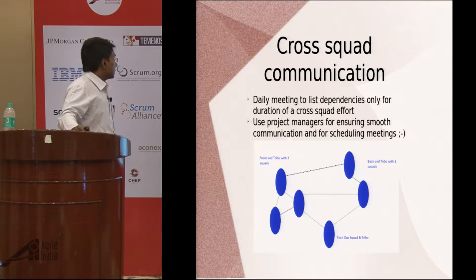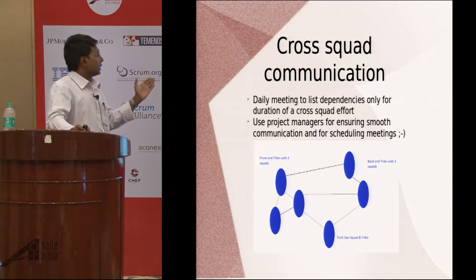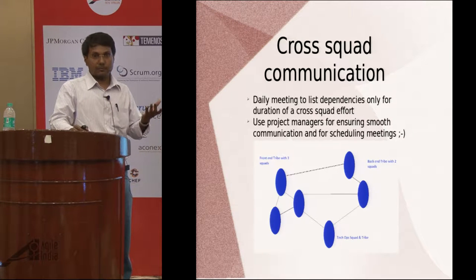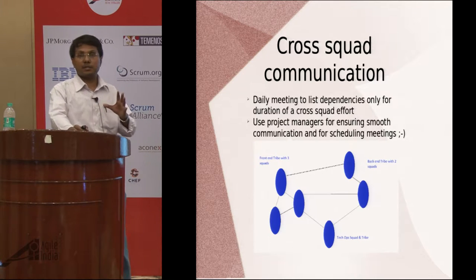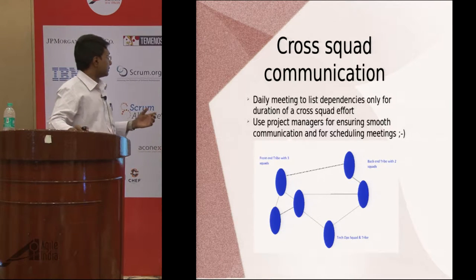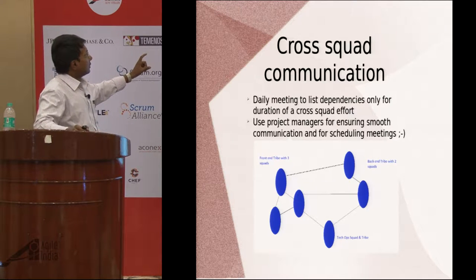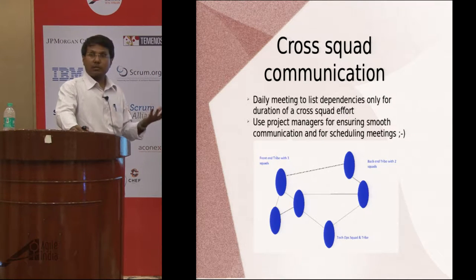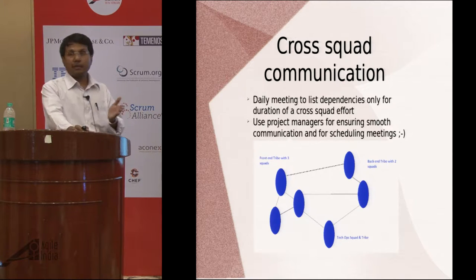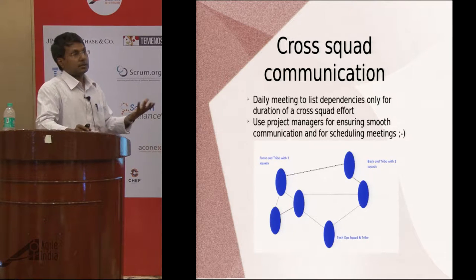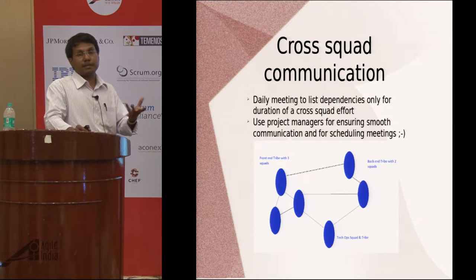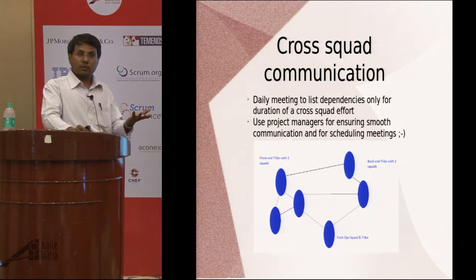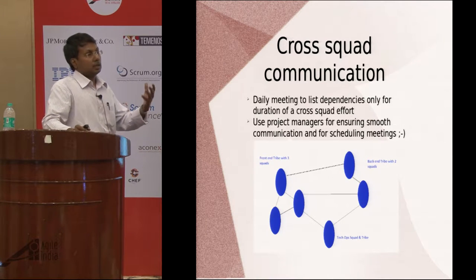For cross-squad communication, there is a daily meeting to list dependencies only for the duration of a cross-squad effort. A squad cannot complete the entire software end-to-end, so there will be dependencies, but the software should be designed to minimize them. Project managers were used to take care of cross-squad communication and scheduling meetings for squad members. The Spotify model is kind of an open-source model where you adapt the solution to fit your organization.